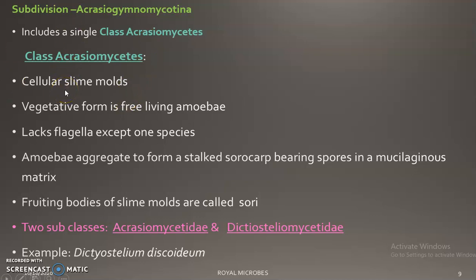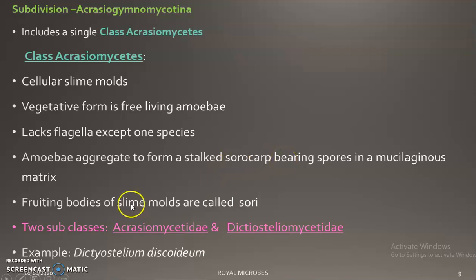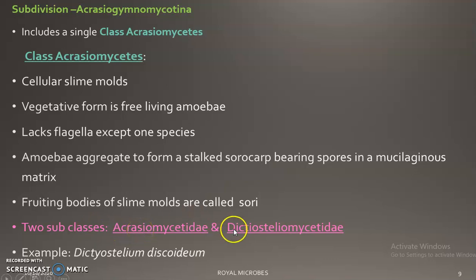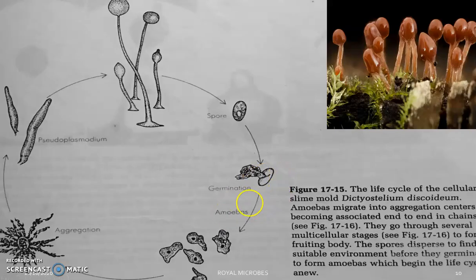Class Acrasiomycetes includes cellular slime molds. The vegetative form is the free-living amoeba; it lacks flagella except in one species. The amoeba aggregates to form a stocked sorocarp — a fruiting body bearing spores in a mucilaginous matrix. The fruiting bodies of these slime molds are commonly known as sori.